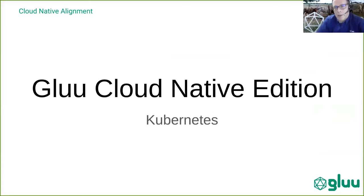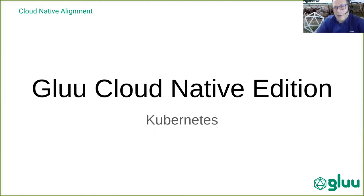This is where Cloud Native comes in. In the past, Glue has had what we call Community Edition, a distribution of the Glue components deployed on VMs using traditional Linux packages — Ubuntu, Debian, CentOS, Red Hat. We've worked on a new distribution called the Cloud Native Edition, or CN. Cloud Native includes not only containers, but also Kubernetes and Helm and a new approach to distributing services and automation. Community Edition is CE and Cloud Native Edition is CN.